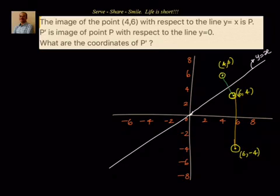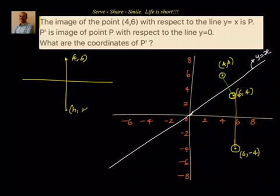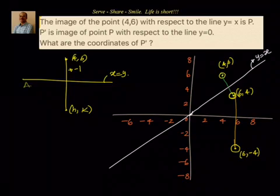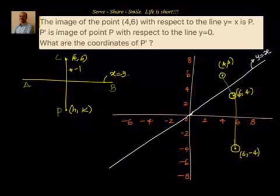So for the subjective method, we will draw the diagram again. We have point 4 comma 6. We don't know the image point — let us call it h comma k. We know the line is x equals to y. Now for the line x equals to y, the slope is 1. So the slope of the perpendicular from the point to this line is minus 1. Let us label the foot of perpendicular as point P on the line, and we are interested in finding the image point.